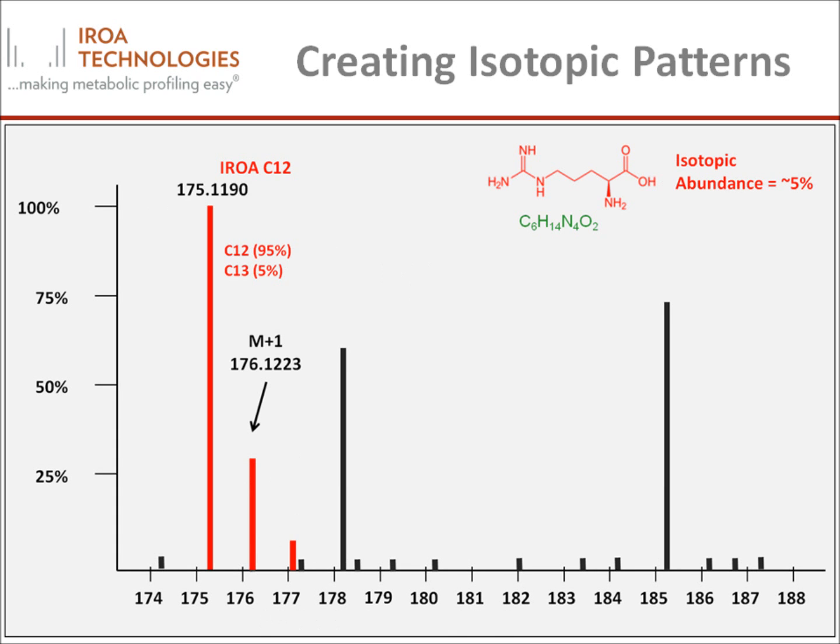If the percentage of C13 is increased to 5%, note that the M plus 1 peak is now significantly larger — 32% of the size of the monoisotopic base peak — and can be easily detected and used to identify compounds of interest.